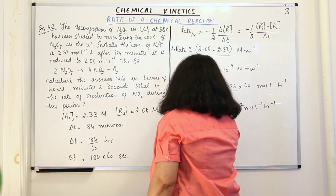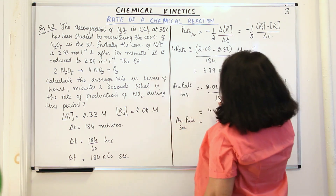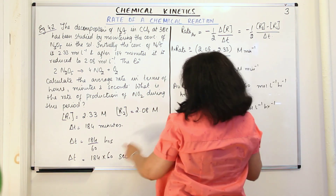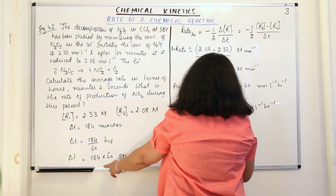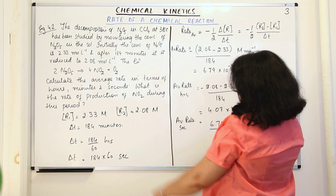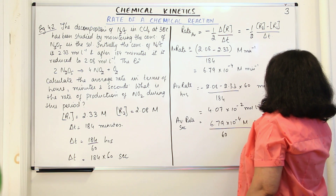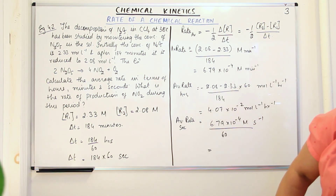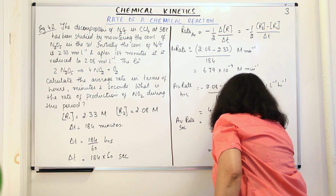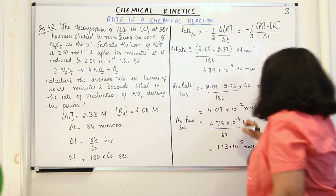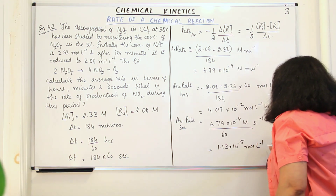For the rate in seconds, you multiply delta T by 60. Taking the minutes result of 6.79 × 10⁻⁴ mol per liter per minute, you divide by 60 to convert the denominator from minutes to seconds. This gives 1.13 × 10⁻⁵ mol per liter per second.